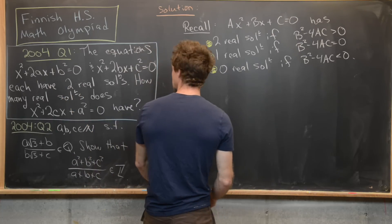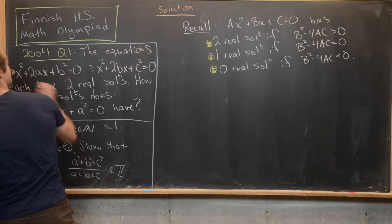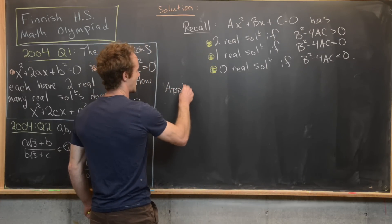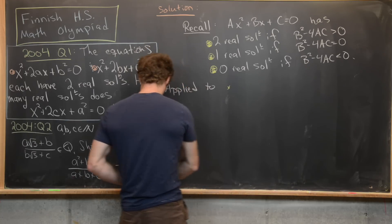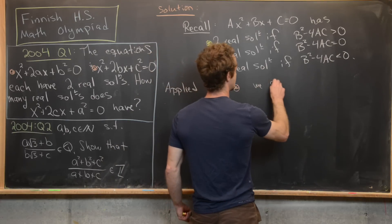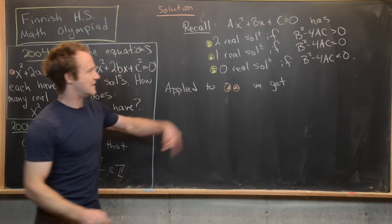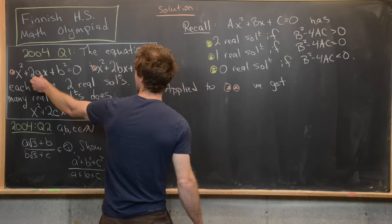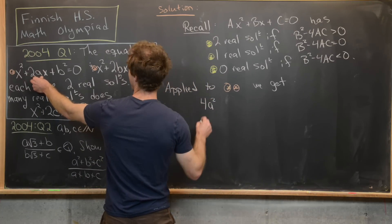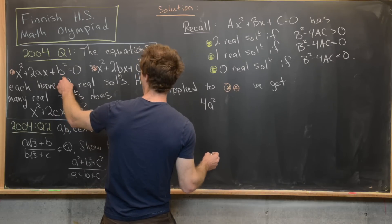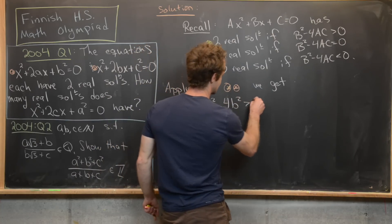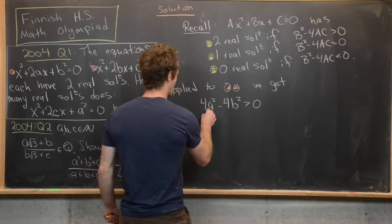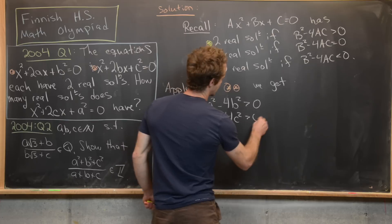Let's apply that to our two equations, keeping in mind they each have two real solutions. Applied to the two starred equations, we get: for the first, (2a)² - 4(1)(b²) > 0, which gives 4a² - 4b² > 0. And similarly for the second, we get 4b² - 4c² > 0.